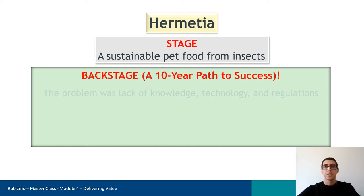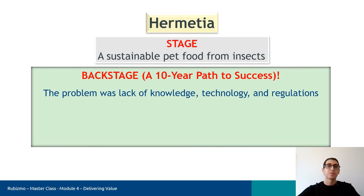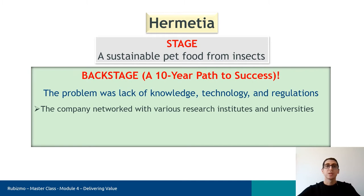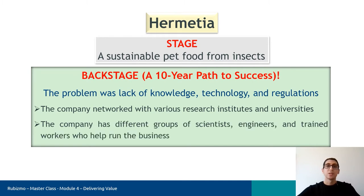In the beginning, the problem was the lack of knowledge, technology, and regulations. But the entrepreneurs themselves got experts in this field. The company networked with various research institutes and universities and got permission to produce this product. Today, the company has different groups of scientists, engineers, and trained workers who help run their business.